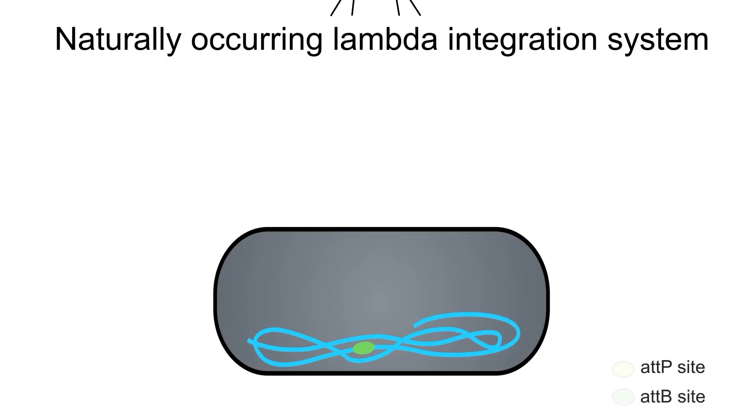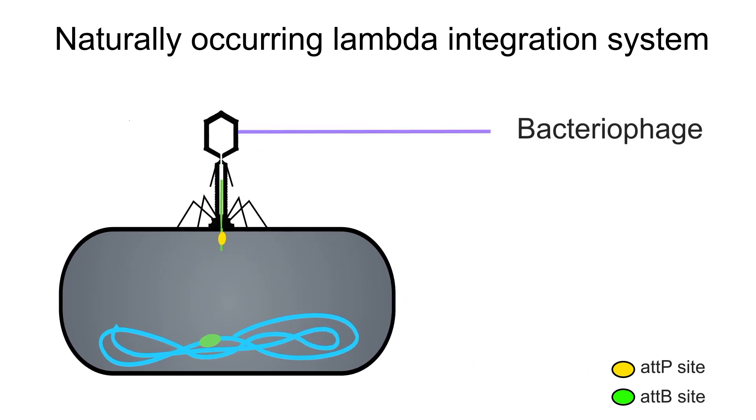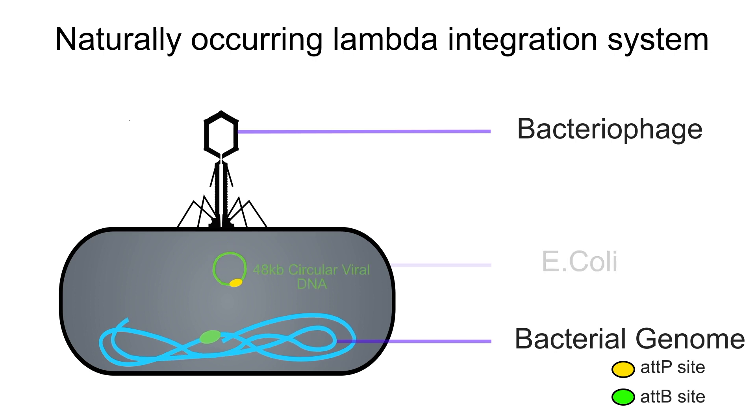LEGIT has been derived from a naturally occurring phage-lambda integration excision system. The wild-type bacteriophage lambda integrates its large circular genome, roughly 48 kilobase, into the host cell during the lysogenic cycle.